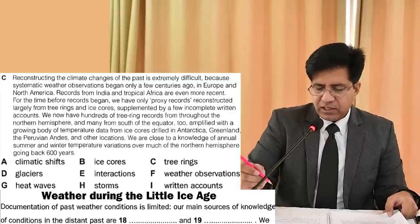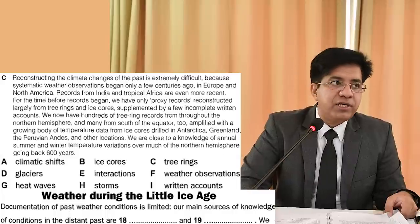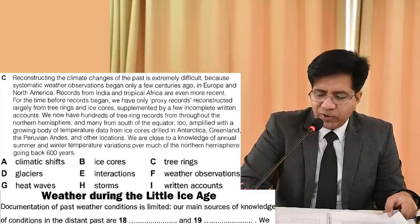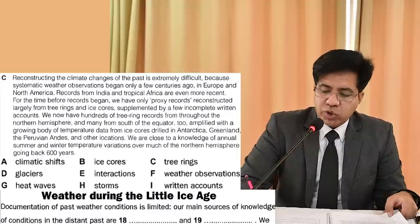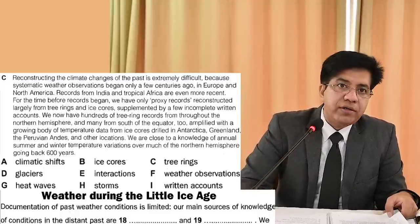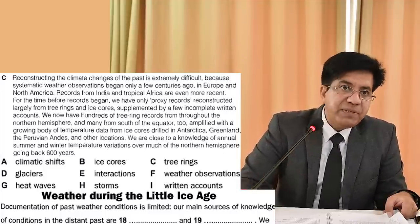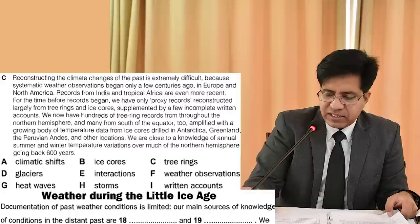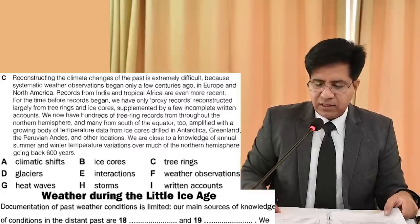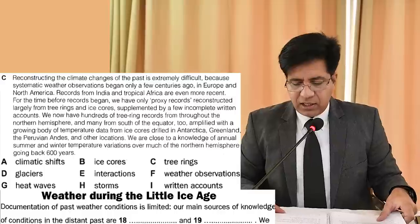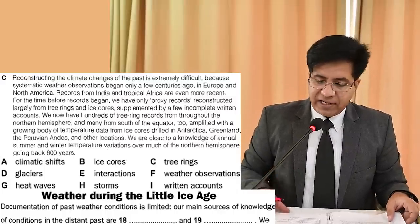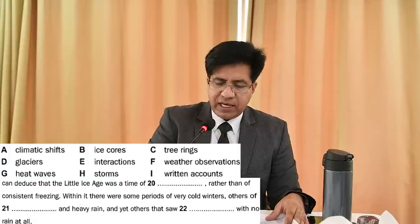The answers are tree rings first — that is option C — and second is ice cores, which is option B. You should write them in the same order: C and then B, because they came in that order. So question 18 answer is C and question 19 answer is B. You will only write the letters, not the words.